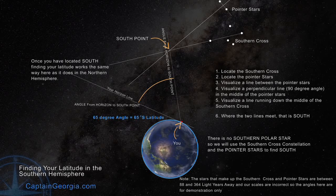And in this last case, we're at 65 degrees, so 65 degrees south latitude. And in the Southern Hemisphere, this is how you find your latitude and how you find south.